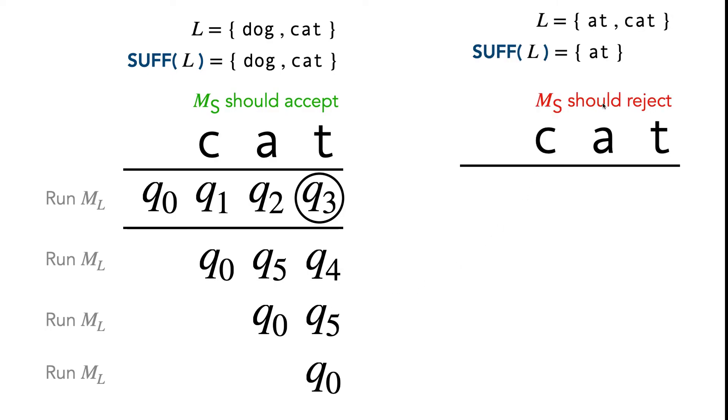For completion, just so we can see what this looks like when all the threads are running in parallel, let's do a rejecting example as well. In this case, the string cat is not in SUFF(L), so M_S should reject. In our first thread, we start off at q_0, and this thread is essentially the same as before.